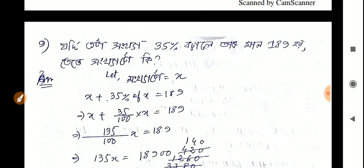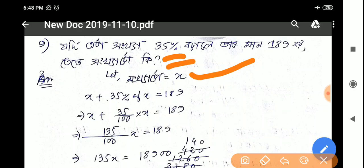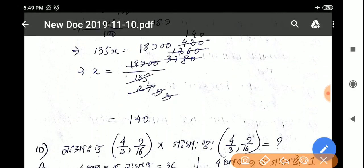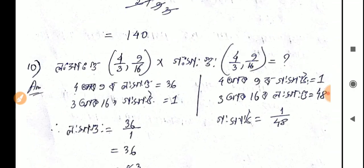Next question: If a number increased by 35% becomes 189, what is that number? Let's say the number is x. So x plus 35% of x equals 189. Writing this: x plus 35x/100 equals 189. This becomes 100x plus 35x over 100 equals 189. So 135x over 100 equals 189. Therefore x equals 189 into 100 divided by 135, which simplifies to 140.